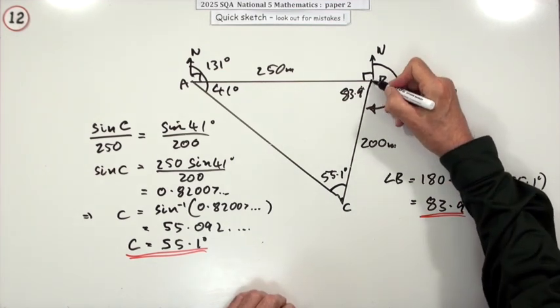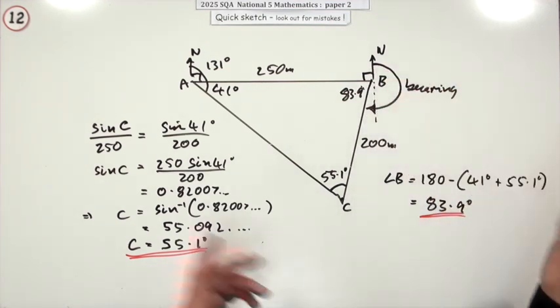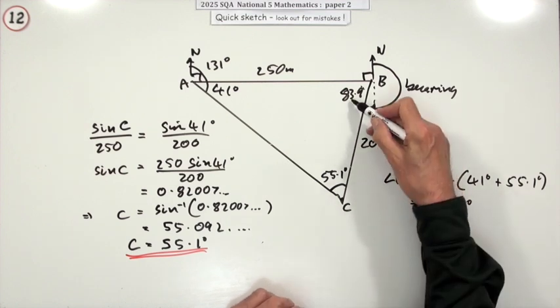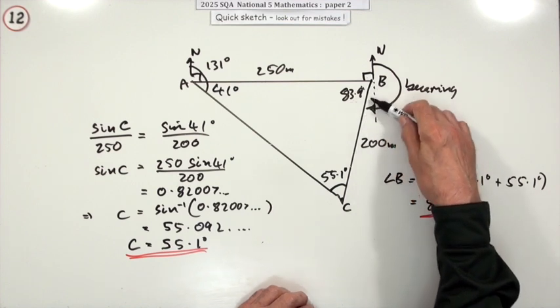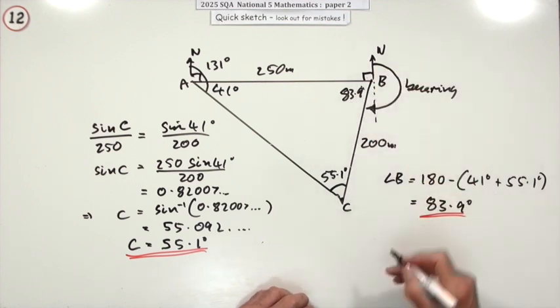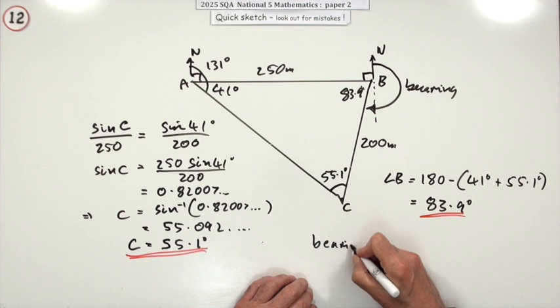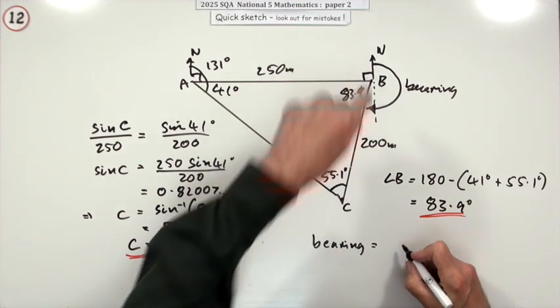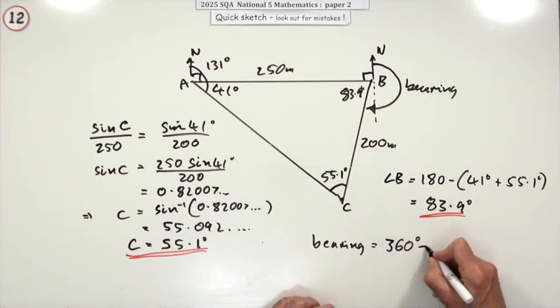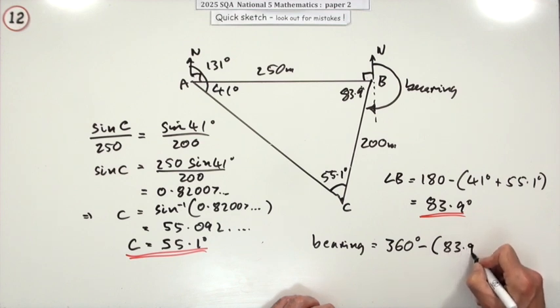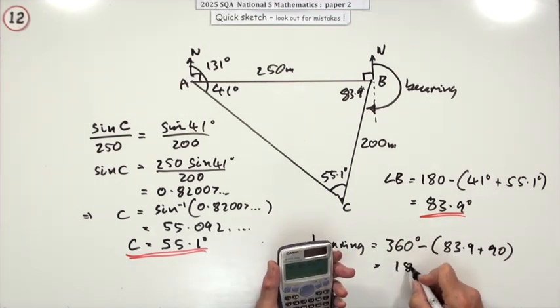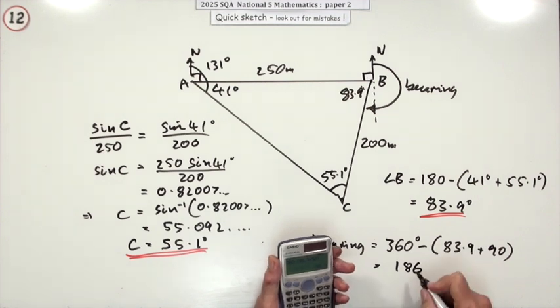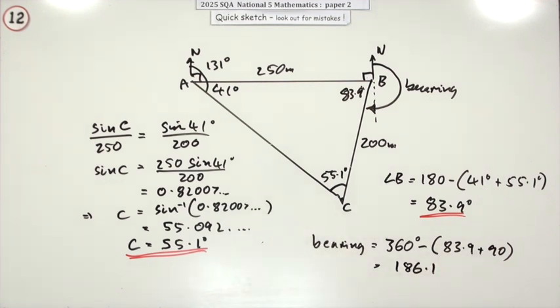And now you can work it out. That's the angle I want. So you've got two ways of doing it. You can either say 83.9 and 90 away from 360, or you could say take that away and find this little bit here. I think I'll just do that first bit. So the bearing will be 83 and 90 away from 360, which gives you 186.1.